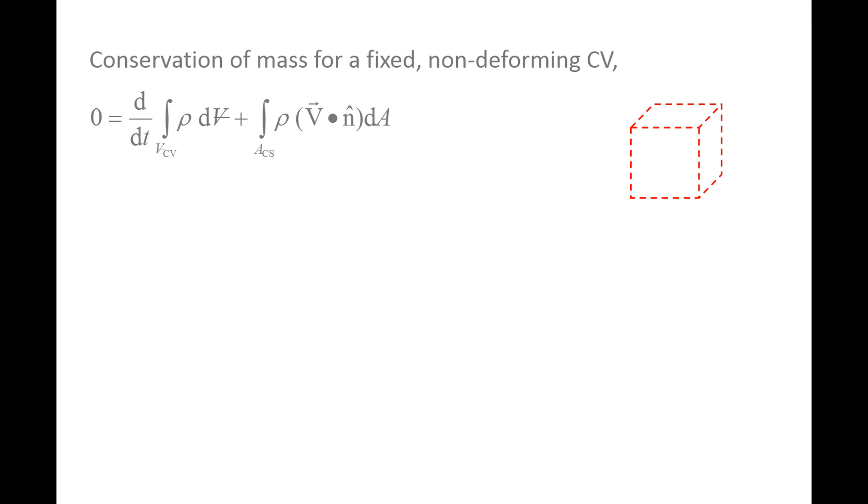On the right, we have a fixed, non-deforming control volume that contains a fluid. The control surface is indicated by red dashed lines. We now apply the general conservation of mass equation for a fixed, non-deforming control volume.